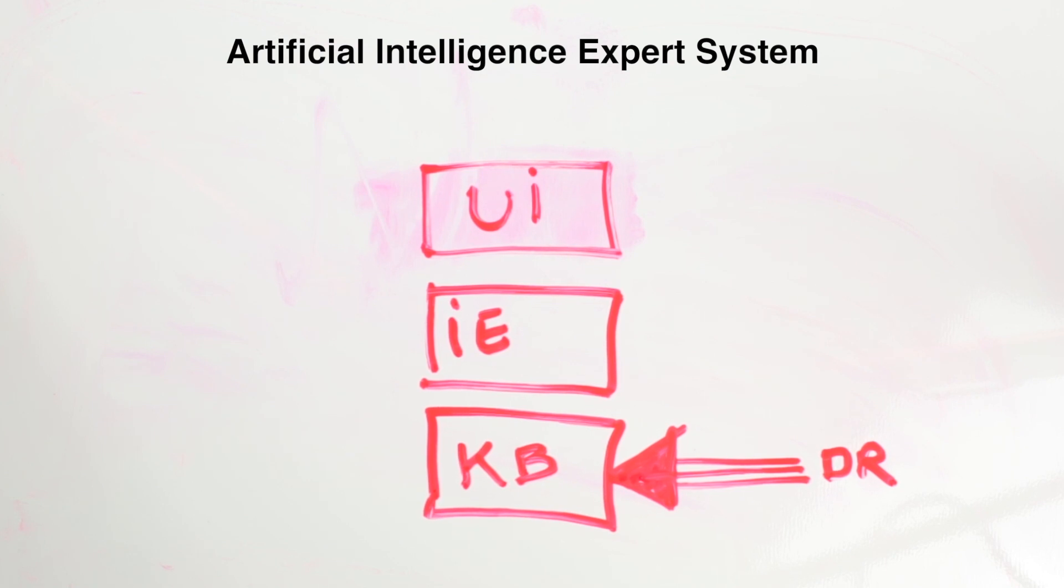The success of any expert system primarily depends on the quality, completeness, and accuracy of the information stored in the knowledge base. So if we have erroneous information in the knowledge base, whenever we run the expert system, the information that we will receive is not accurate, and it's probably not worth anything. So the knowledge base info needs to be really, really high quality.